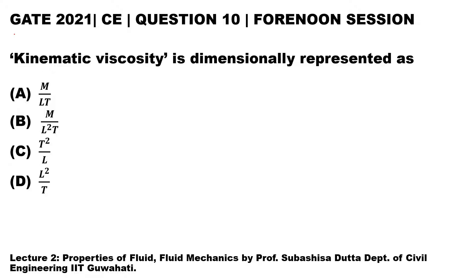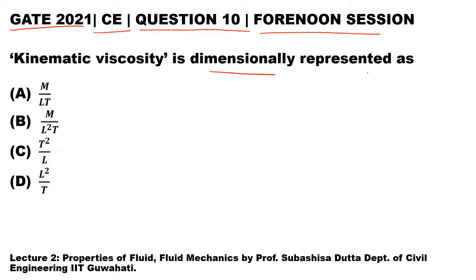Hello students, let's see another question which came in GATE 2021 Civil Engineering. This was question number 10 in the Foreknown session. The question states that kinematic viscosity is dimensionally represented as — four options are given and we have to identify which of them is correct.